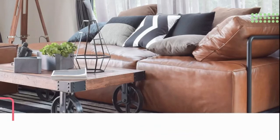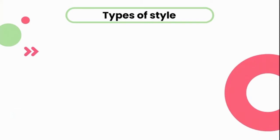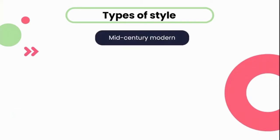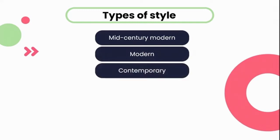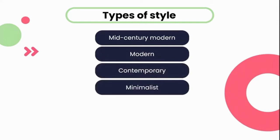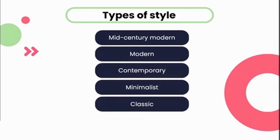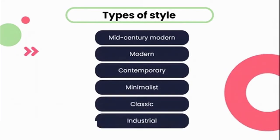Now we know what style is, and we know the importance of learning about the characteristics of each style group. Let's take a look at the different style types most commonly used today: mid-century modern, modern style, contemporary, minimalist, classic style, and industrial style. These are just a few of the style types we'll look at in this lesson — there are many more. In our history of design, we will also look at styles like Rococo, Art Deco, and Victorian style, which have quite a big influence on these style types, but that will come in your later lessons.